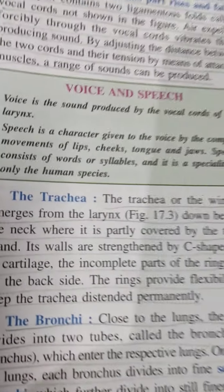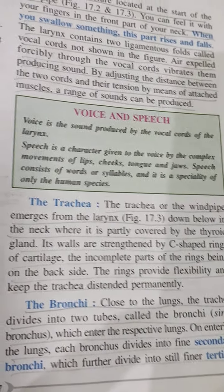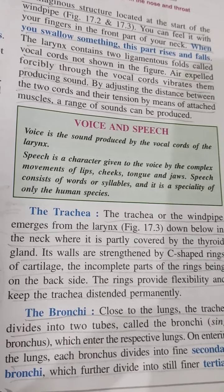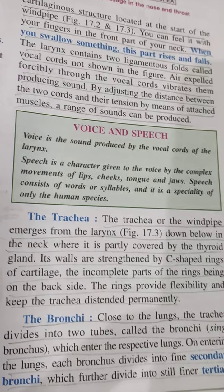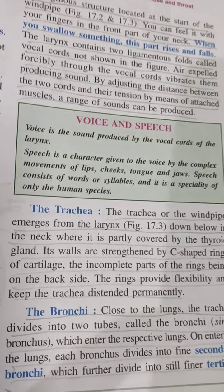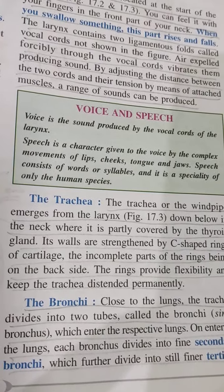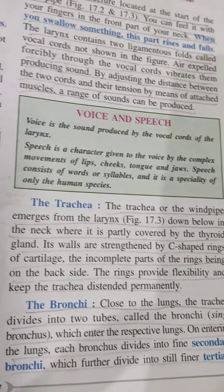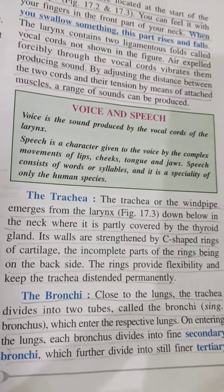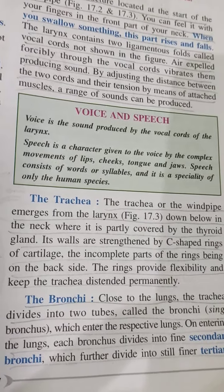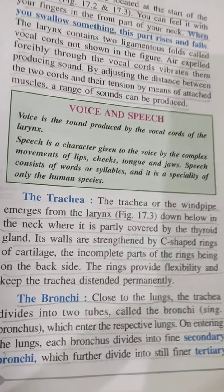The next part is the trachea or windpipe, which emerges from the larynx down below in the neck where it is partly covered by the thyroid gland. Its walls are strengthened by C-shaped rings of cartilage, with the incomplete parts of the rings on the backside. These C-shaped rings provide flexibility and keep the trachea permanently distended, giving it a mechanical framework.